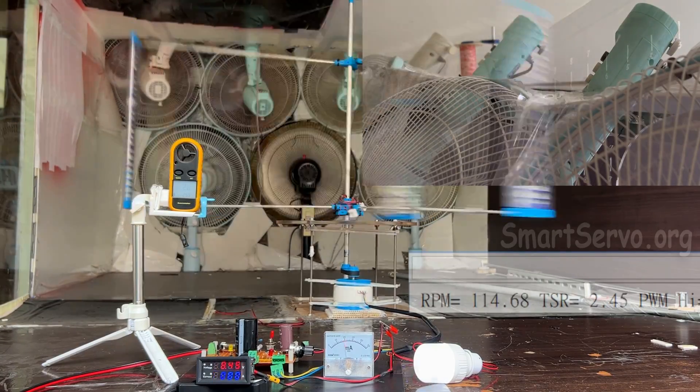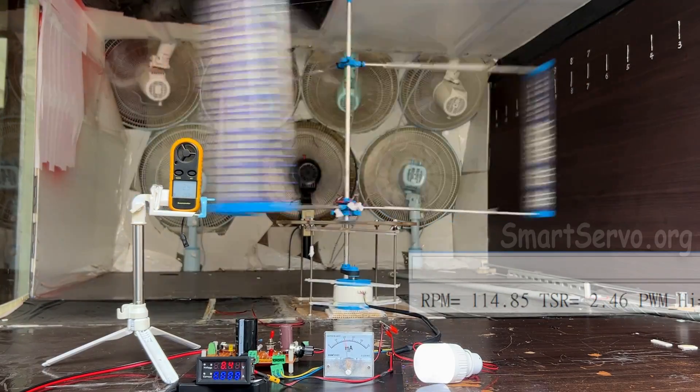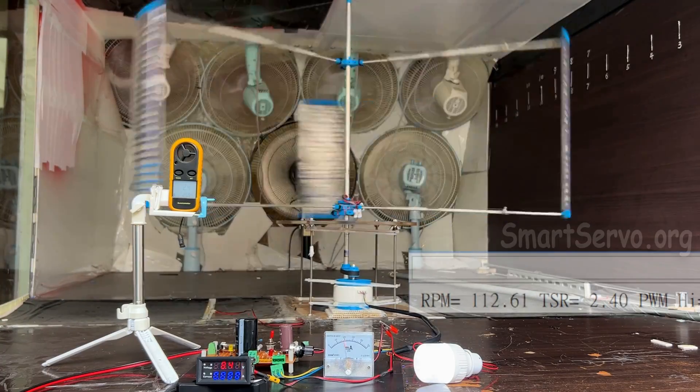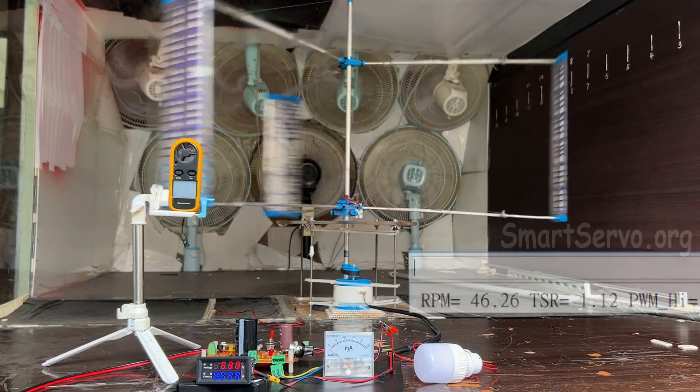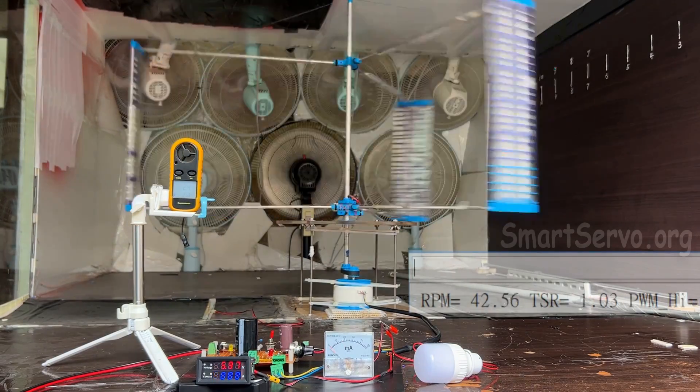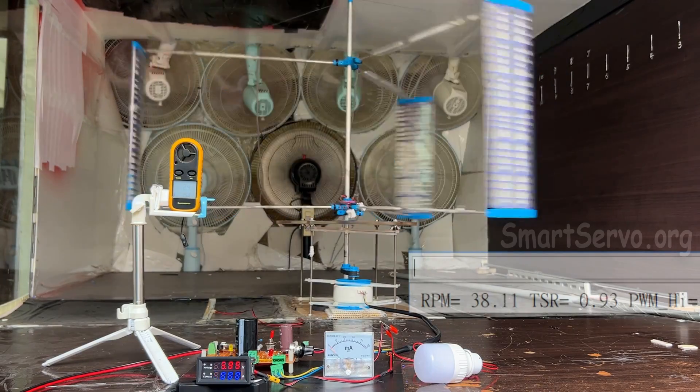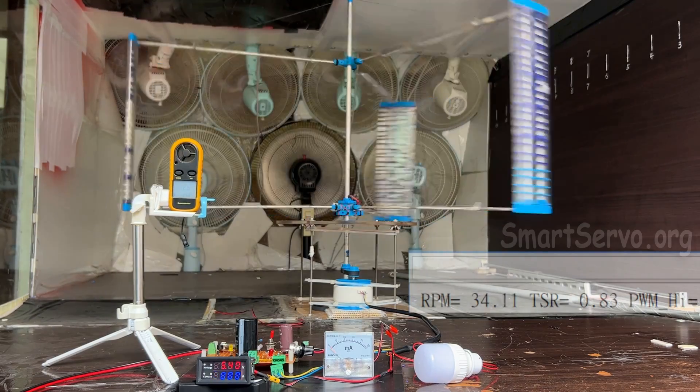Now weaken two of the fans to reduce the wind speed. The speed of the wind turbine begins to decrease. After a while, it almost stopped. It means that the wind turbine cannot drive the generator under the current wind speed.